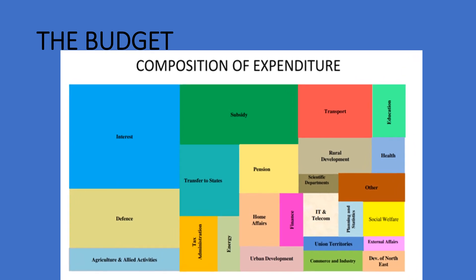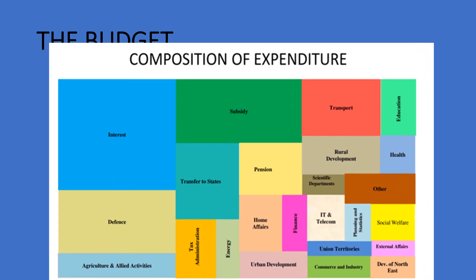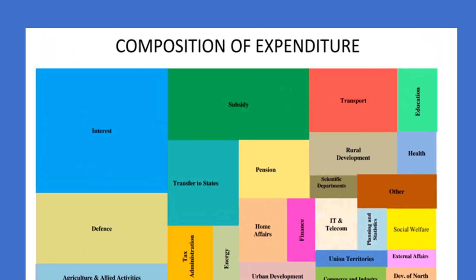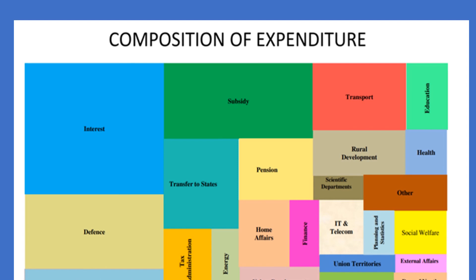These would include the various central government ministries' spending on programs, schemes, capital expenditure, and administrative expenditure for the remainder of the current financial year 2023, and what they project to spend in the coming financial year 2024.